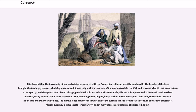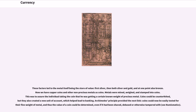In Africa, many forms of value store have been used, including beads, ingots, ivory, various forms of weapons, livestock, the manilla currency, and ochre and other earth oxides. The manilla rings of West Africa were one of the currencies used from the 15th century onwards to trade slaves. African currency is still notable for its variety, and in many places various forms of barter still apply.